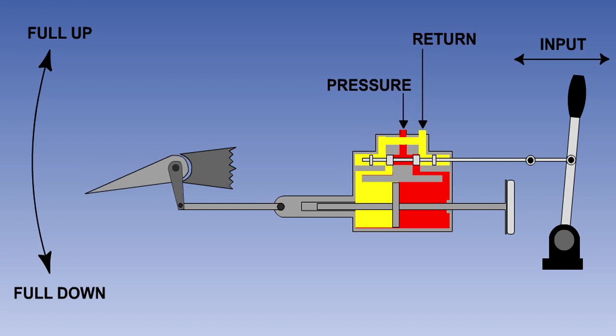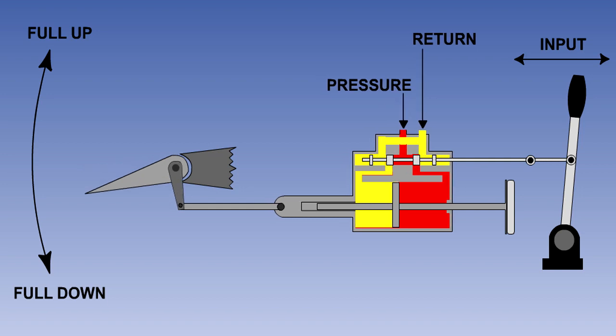Since the ram is fixed to the aircraft, hydraulic pressure will now move the actuator housing over to the right, thus lowering the elevator. As the actuator housing moves, it gradually repositions the control valve pistons until they cover the actuator ports again, thereby cutting off further hydraulic supply and blocking off the return port. This creates a hydraulic lock in the actuator and prevents further control surface movement.